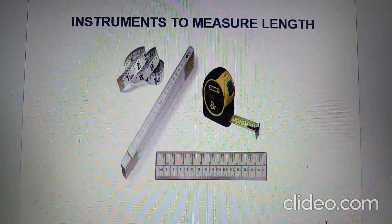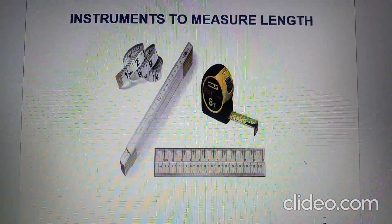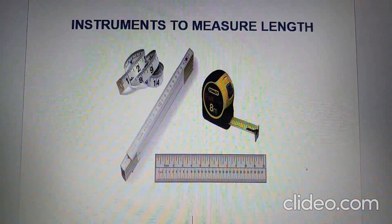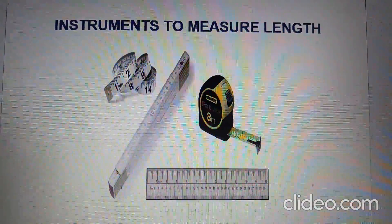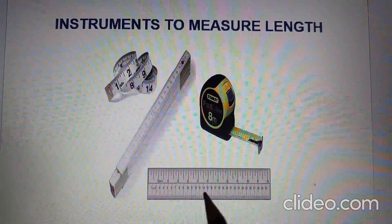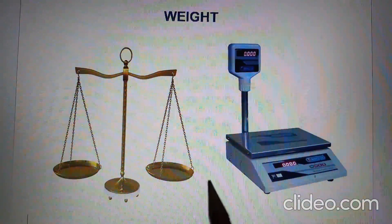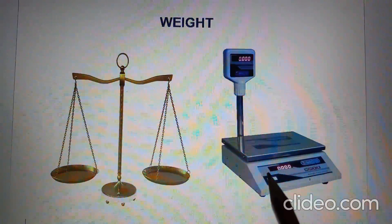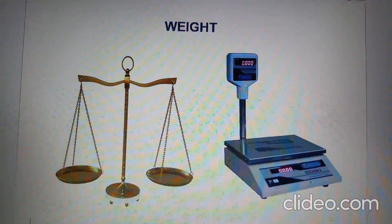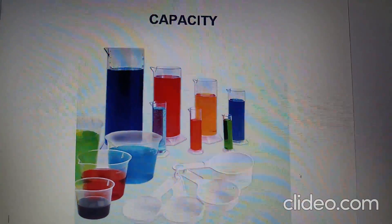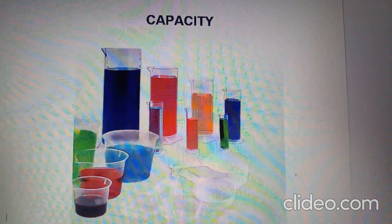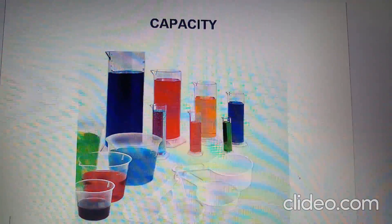To measure length, inch tape, ruler, or meter rod is used. To measure weight, a weighing scale or electronic weighing machine is used. To measure capacity, beakers, jars, cups, and spoons are used.